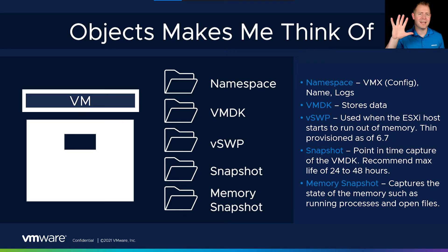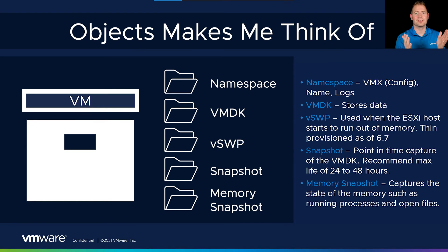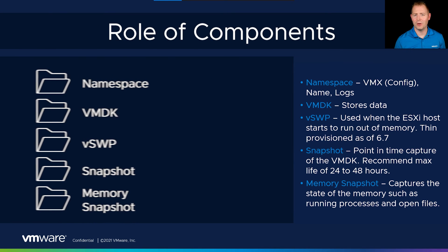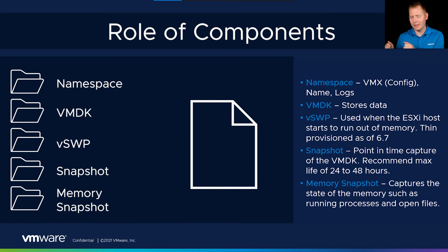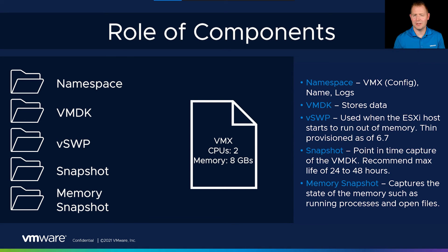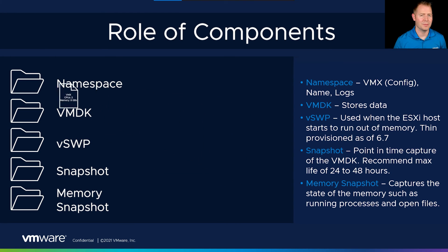So now we've talked about our five different types of objects: our namespace, our VMDK, our swap space, our snapshot, and our memory snapshot. But those are just file folders — we have to have something we can put inside those file folders. That's where components come into play. Components are the actual data. In the case of our namespace object, we've got our VMX file that says how many CPUs, how much memory, how many NICs — that's stored in a component inside our namespace object.